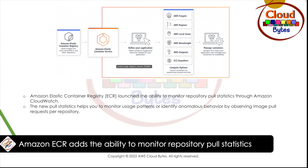With additional insight, customers can identify commonly accessed repositories, understand the adoption of new repositories, or have better insight on repository usage. Customers facing service limits can use this data to understand which repositories are seeing the greatest number of image pulls or to uncover anomalous behavior that is driving unnecessary pull requests.